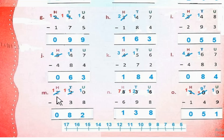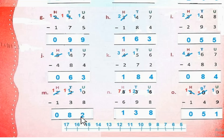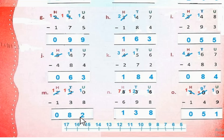Part M: 220 minus 138. 0 से 8 minus नहीं होता। So हम 1 borrow करेंगे — 2 से 1 borrow होगा तो यह 1 रह जाएगा, और यह 10 हो जाएगा। 10 minus 8 = 2. अब 1 से 3 minus नहीं होता, so फिर 2 से 1 borrow करेंगे — यह 1 रह जाएगा, और यह 11 हो जाएगा। 11 minus 3 = 8. 1 minus 1 = 0. So the answer is 82.